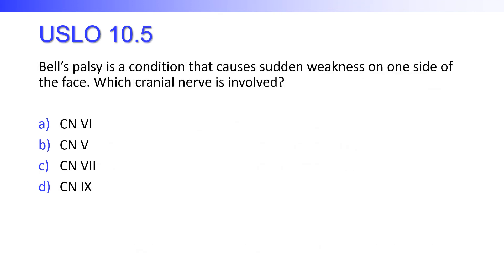Let's talk about homeostatic imbalances. Bell's palsy is a condition that causes sudden weakness in one side of the face. Which cranial nerve is involved? Is it cranial nerve 6, cranial nerve 5, cranial nerve 7, or cranial nerve 9? It has to do with cranial nerve 7, the facial nerve.